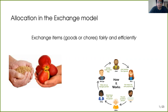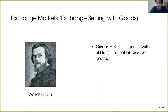First, let me start with the exchange setting with goods, also commonly known as exchange markets — a concept that has existed since the 19th century from the time of Leon Walras. Here we have a set of agents and a set of divisible goods. Divisible goods means they can be fractionally allocated. Each agent comes to the market owning a set of goods, and the high-level picture is that these agents want to exchange their goods with other agents and maximize their utility.